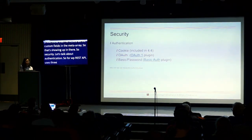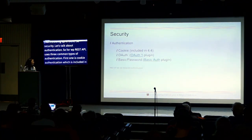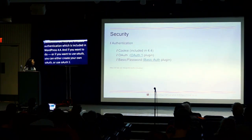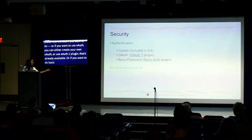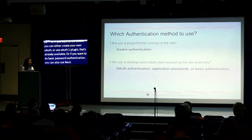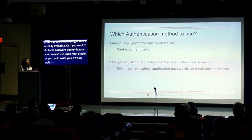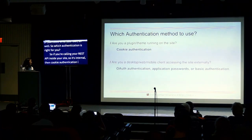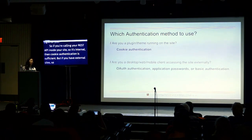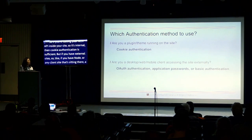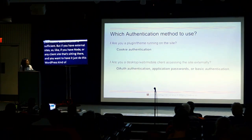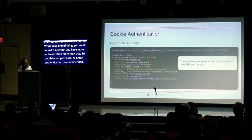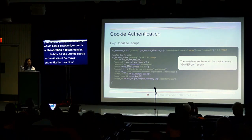Now let's talk about security and authentication. For WordPress, the WP REST API commonly uses three types of authentication. The first is cookie authentication, which is included in WordPress 4.4. For OAuth, you can either create your own or use an OAuth plugin that's already available. If you're calling your REST API internally within your site, cookie authentication is sufficient. But if you have external sites — like a Node client doing a headless WordPress setup — you want more authentication, so OAuth, application password, or basic authentication is recommended.